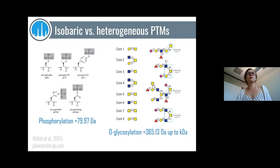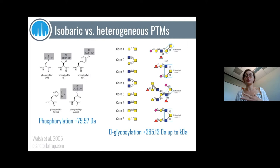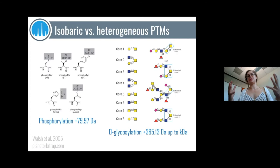One more term to keep in mind about PTMs is whether the PTM is isobaric or heterogeneous. Isobaric PTMs cause an addition of the same mass regardless of which amino acid residue carries them — this is the case for phosphorylation, which adds about 80 Daltons regardless of whether it appears on serine, threonine, or tyrosine. This is not the case for heterogeneous PTMs. For example, O-glycosylation varies in mass from a few hundred Daltons up to several kilodaltons, with many different kinds of PTMs fitting under that umbrella.